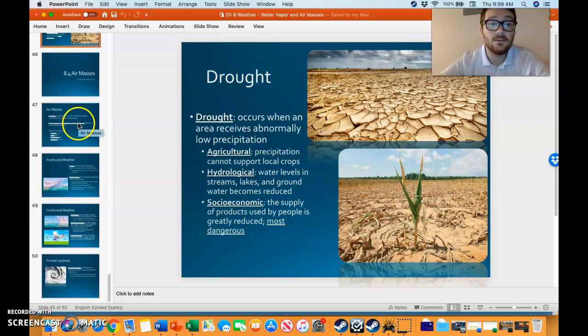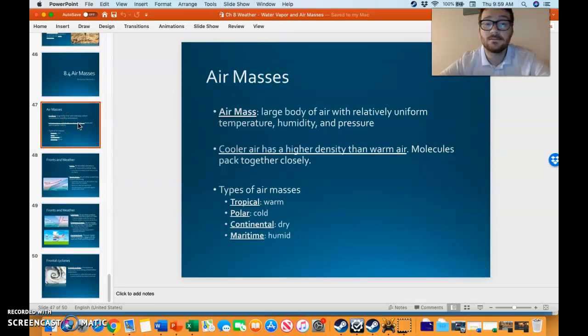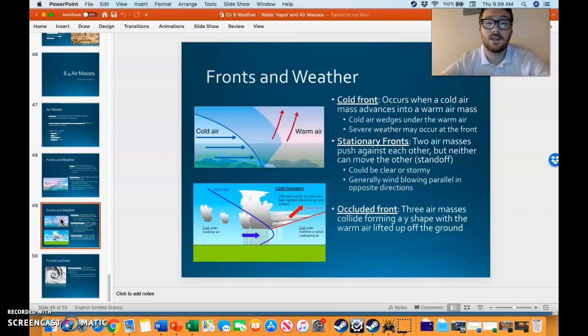And lastly, you have air masses: from tropical to polar to continental to maritime. And various different types of fronts: from the warm front to the cold front to the stationary front to the occluded front.